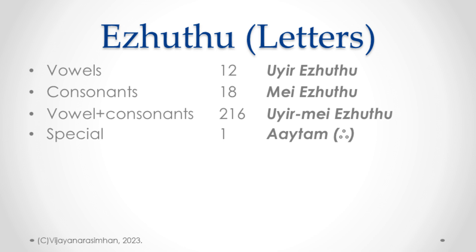In Tamil there are basically 30 letters, 30 Erut. We classify them as Uir and Mei. The vowels are called Uir Erut, and the consonants are called Mei Erut.